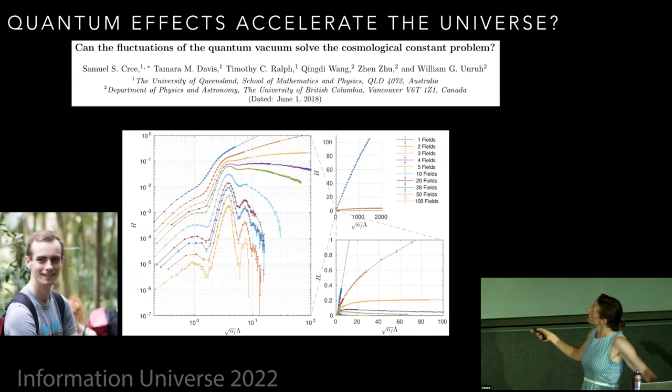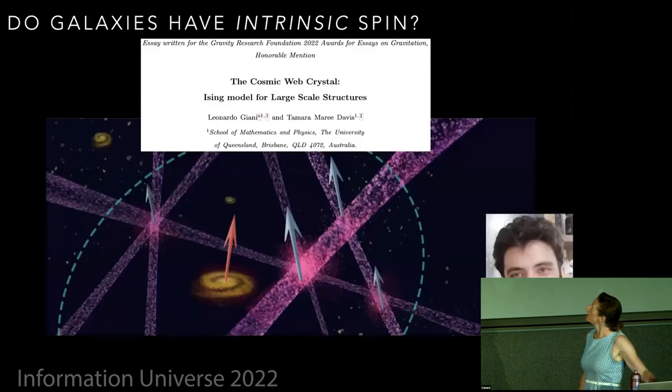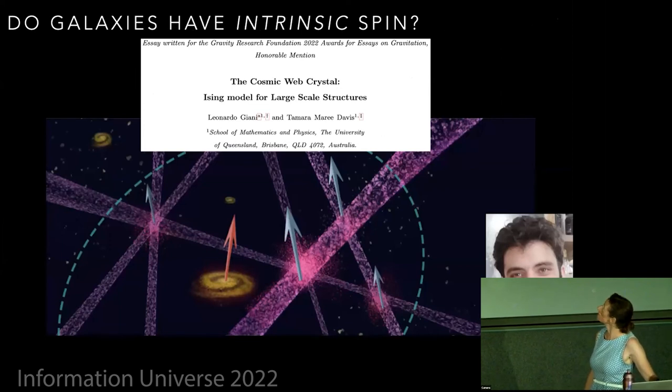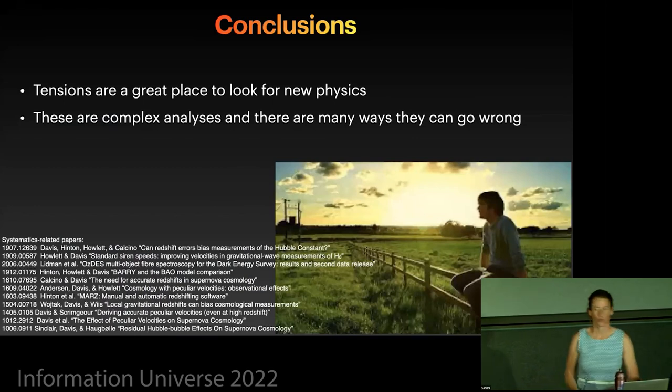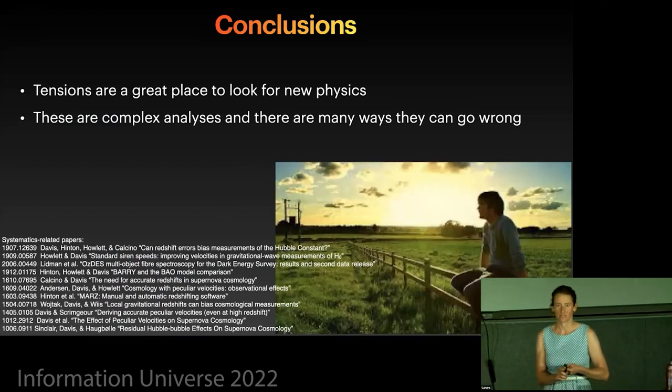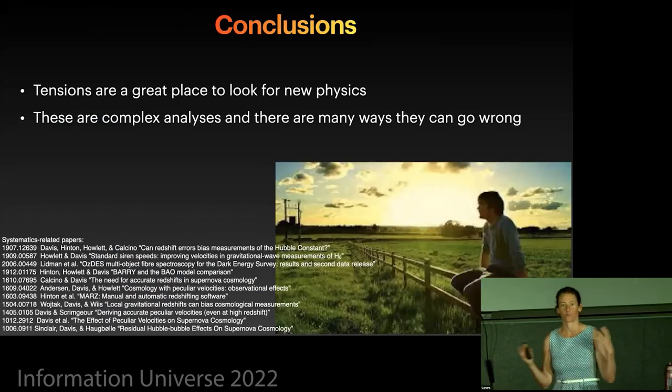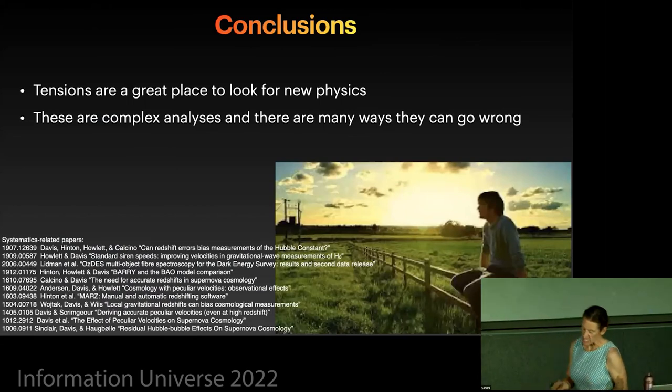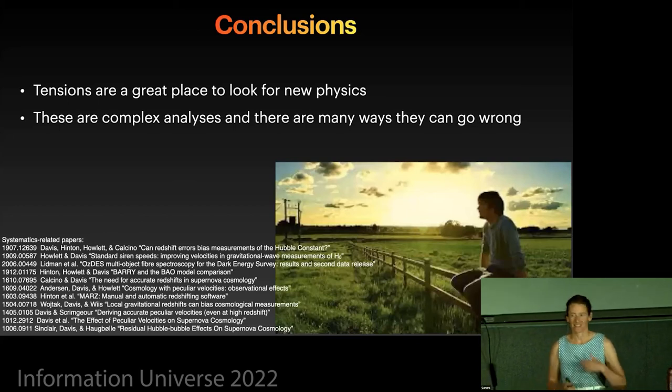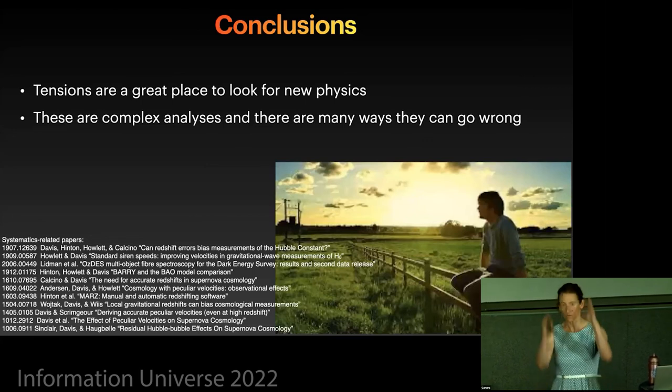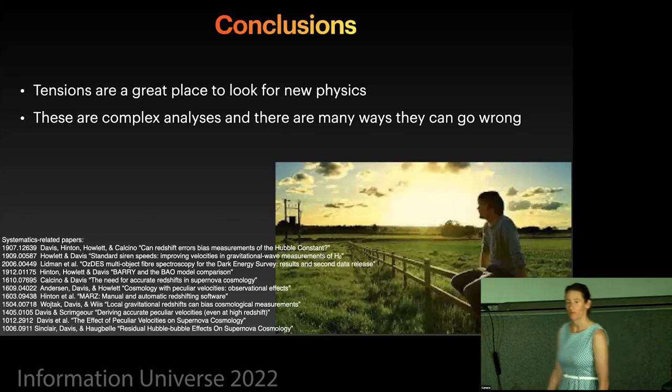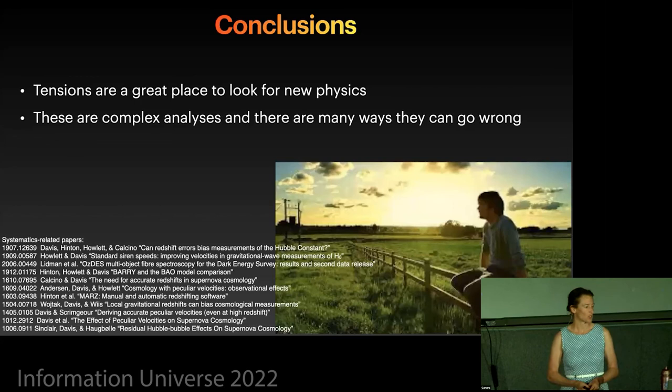So to finish up, my conclusions. Tensions are a really interesting place to look for new physics, and it would be very exciting if the tensions that we're seeing are an indication of some new physics that we need to explain that. And particularly if it tells us how to merge quantum physics and gravity or something like that. But my take home message is basically like, we're not able to find a systematic error in our data that can explain the tensions at this stage. But there are lots of ways in which measurements can go wrong. So just take it with a grain of salt. Don't get too carried away going, whoa, there's definitely an error here. And at the moment I'm sitting on the fence as to whether it's a systematic error or theoretical resolution. And I'll stop there. Thanks very much.